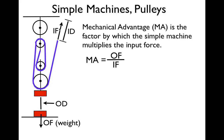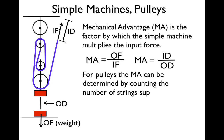There are two equations. The mechanical advantage (MA) can be found by taking the output force divided by the input force. Or you can take the mechanical advantage equals the input distance divided by the output distance. The mechanical advantage is a unitless number because the forces or the distances will cancel. Now, for pulleys — and only for pulleys, because that's the only one that really has a string — you can determine the mechanical advantage by counting the number of strings supporting the output force or supporting the weight.